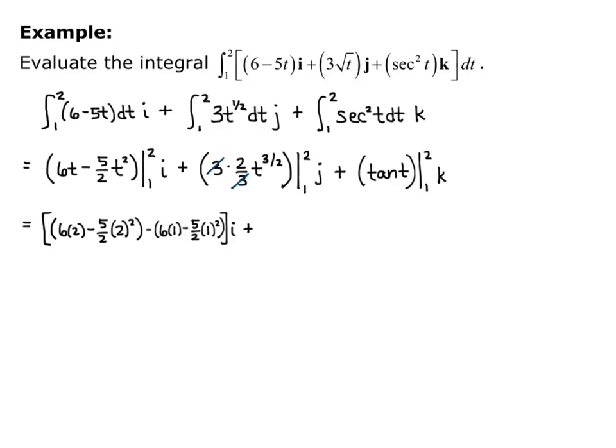The 3's cancel, so I have 2 times 2 to the 3/2 minus 2 times 1 to the 3/2 for the j component. And my k component is tangent of 2 minus tangent of 1.